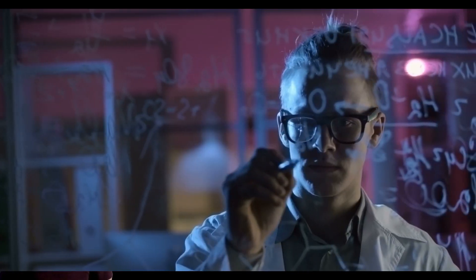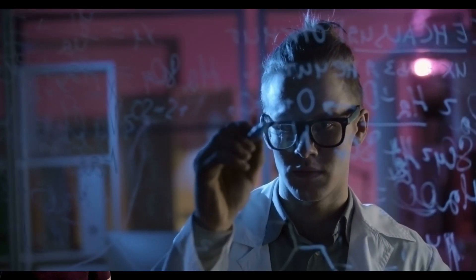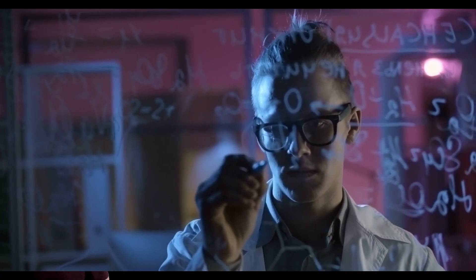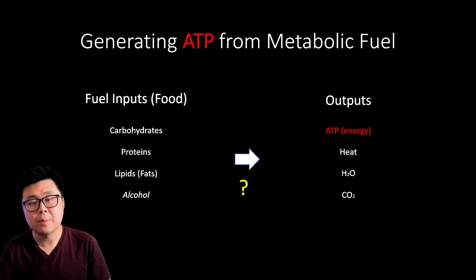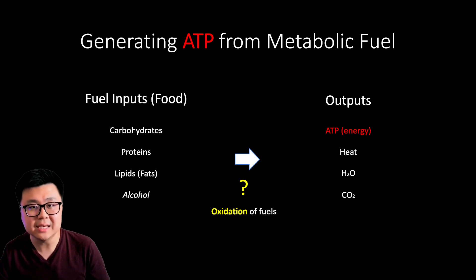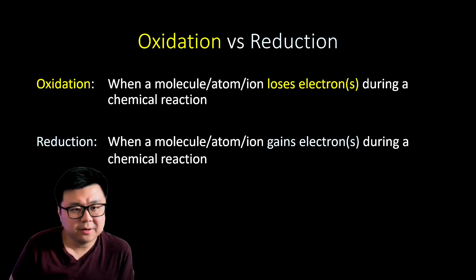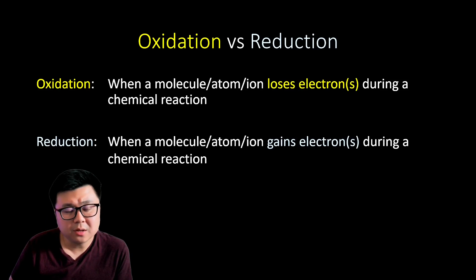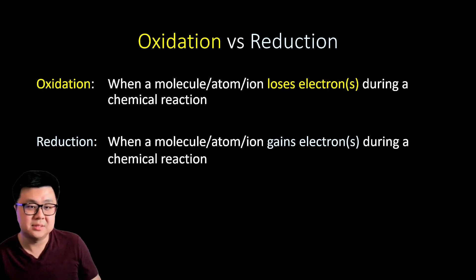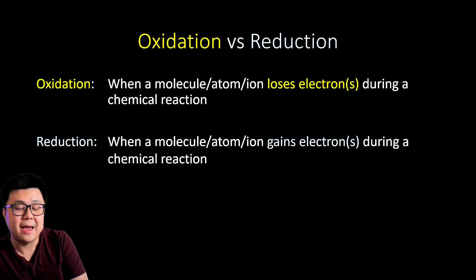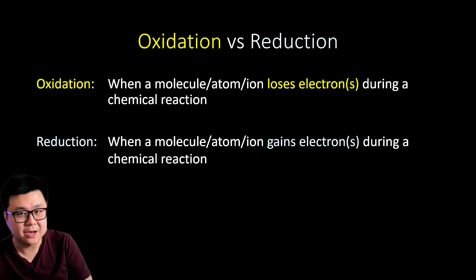Our body oxidizes these inputs to turn them into outputs. Oxidation is when a molecule, atom, or ion loses one or more electrons in a chemical reaction. Reduction is the opposite — reduction is when a molecule, atom, or ion gains one or more electrons in a chemical reaction.